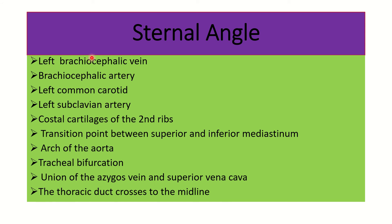The structures located at the sternal angle include: left brachiocephalic vein, brachiocephalic artery, left common carotid artery, left subclavian artery, costal cartilage of the second ribs, the transition point between the superior and inferior mediastinum, tracheal bifurcation, union of the azygous vein and superior vena cava, and the thoracic duct. These structures may be damaged or injured in this scenario.